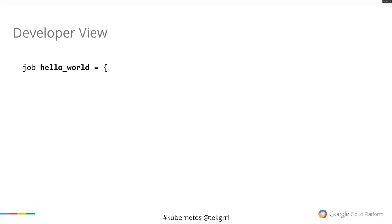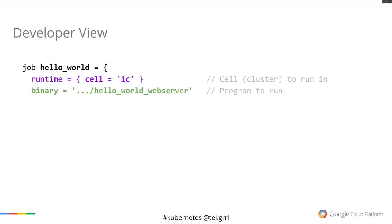Some of you may have heard of Borg before — we published a white paper on it earlier this year. Borg is our cluster scheduler. To access Borg and all of that compute resource, our software engineers create a Borg config file. They start it with a job name like 'hello world', then identify which cell they'd like to run it in — in this case a cell called IC. Then they specify the path to their binary, in this case called 'hello world web server'. These binaries are fairly fat, statically linked binaries, and this one would also include its own web server.